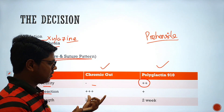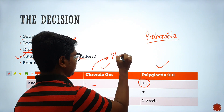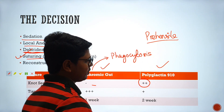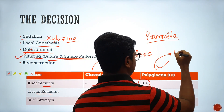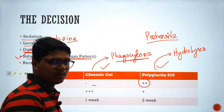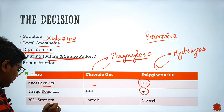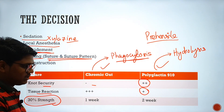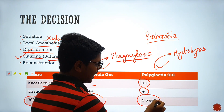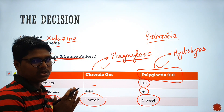Regarding tissue reaction, chromic catgut is a natural absorbable suture absorbed by phagocytosis, which causes maximum tissue reaction. Polyglactin 910 is a synthetic absorbable suture absorbed by hydrolysis, causing much less tissue reaction. Also, 30% of strength is gone after one week with chromic catgut, while polyglactin 910 maintains its strength up to two weeks, which is ideal for wound healing. So I chose polyglactin 910 as the suture material for suturing the lacerated tongue.